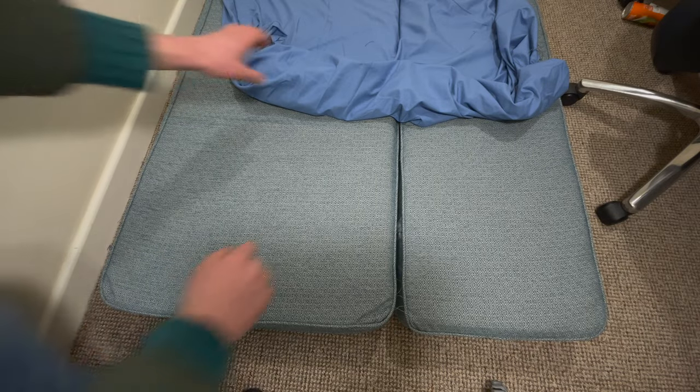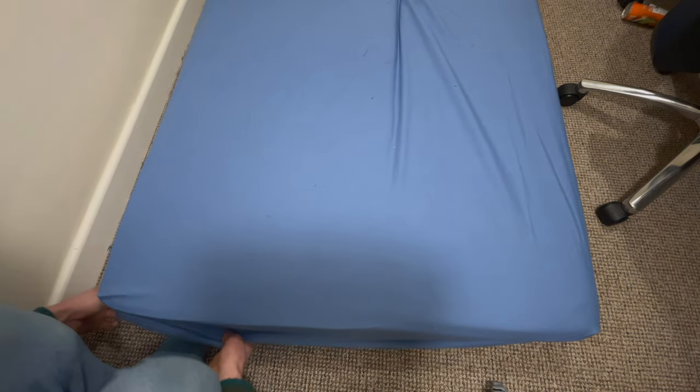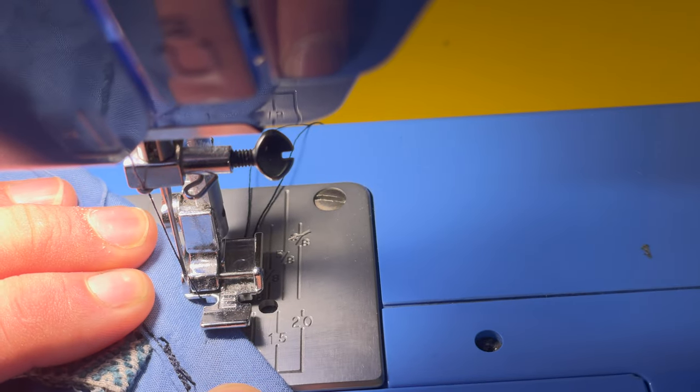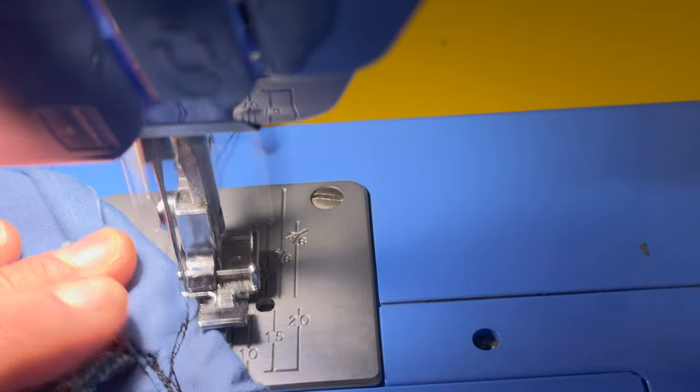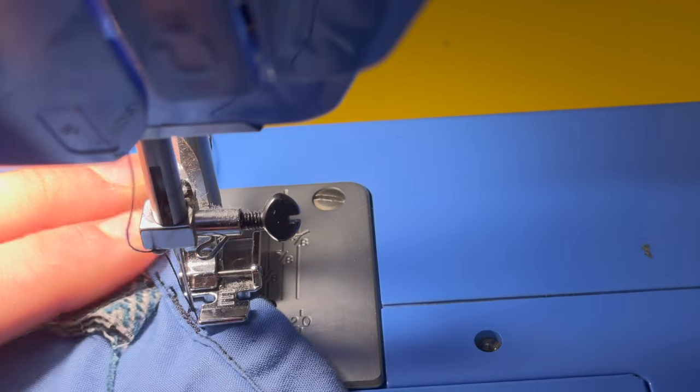Now do a test fit. Put the sheet onto the mattress to check the fit. If it's too loose shorten the elastic. When you're satisfied replace the safety pins with several back and forth stitches for additional strength. Lastly complete the seam on the edges between the elastic.